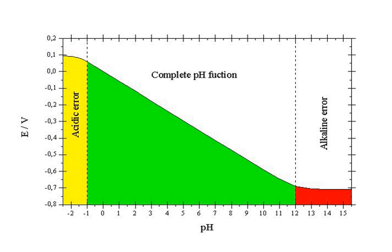A glass electrode is a type of ion-selective electrode made of a doped glass membrane that is sensitive to a specific ion. The most common application of ion-selective glass electrodes is for the measurement of pH. The pH electrode is an example of a glass electrode that is sensitive to hydrogen ions. Glass electrodes play an important part in the instrumentation for chemical analysis and physicochemical studies. The voltage of the glass electrode, relative to some reference value, is sensitive to changes in the activity of certain types of ions.